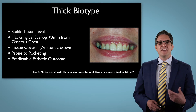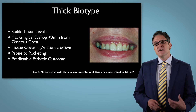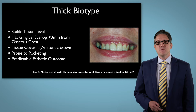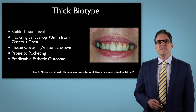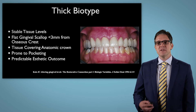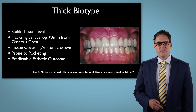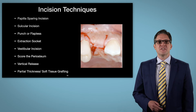Patients with thick tissue biotypes have stable tissue levels, a flat gingival scallop, and tissue covering their anatomic crown. This biotype is prone to pocketing, but it's also very predictable for aesthetic outcomes. We can address missing teeth and uneven smiles through periodontal surgery and implant placement, developing nice gingival architecture.